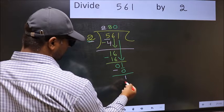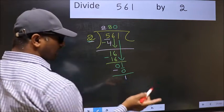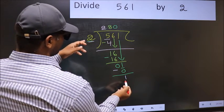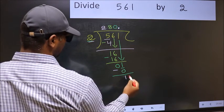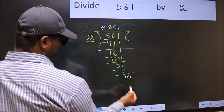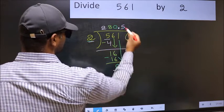Over here we did not bring any number down. And also 1 is smaller than 2. So now you can put a dot and take 0. So 10. When do we get 10 in 2 table? 2 5s, 10.